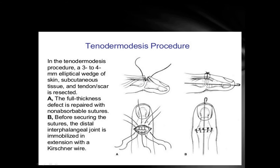In the tenodermodesis procedure, scar tissue is removed from both the skin and tendon substance, and multiple sutures are passed across the skin, through the distal segment of the tendon, then through the proximal segment, and out through the skin. The wound is closed with knots.